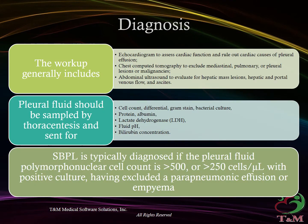Diagnosis: The workup generally includes echocardiogram to assess cardiac function and rule out cardiac causes of pleural effusion, chest computed tomography to exclude mediastinal, pulmonary, or pleural lesions or malignancies, and abdominal ultrasound to evaluate for hepatic mass lesions, hepatic and portal venous flow, and ascites.